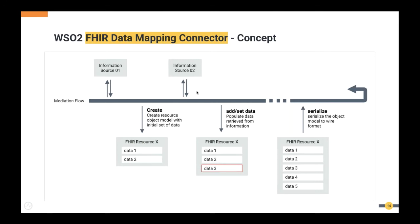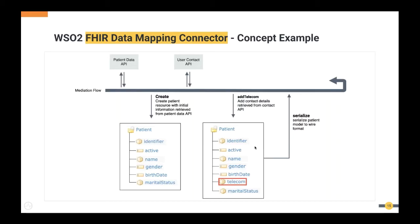As shown in the diagram, when you have information you can create the FHIR resource and inject that information into the object model. If you retrieve more information from another source, you can inject that into the FHIR object model as well. After populating the FHIR resource to a certain level, users can serialize it to the wire-level format — JSON or XML — which are the standard FHIR content types — and return it back to the client.